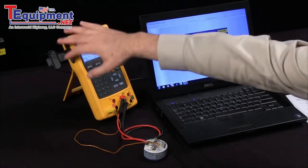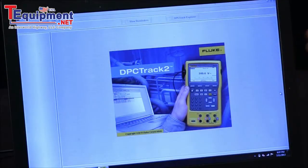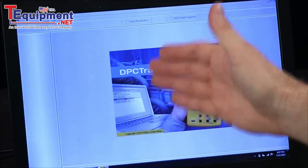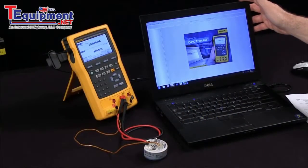Via the USB connection you download your data into your computer via DPC track. This allows you to track your assets as well as store the calibration results, helping you with compliance and conformity with any regulations.